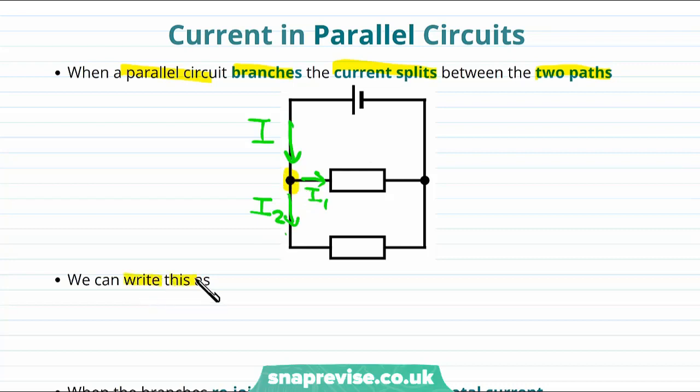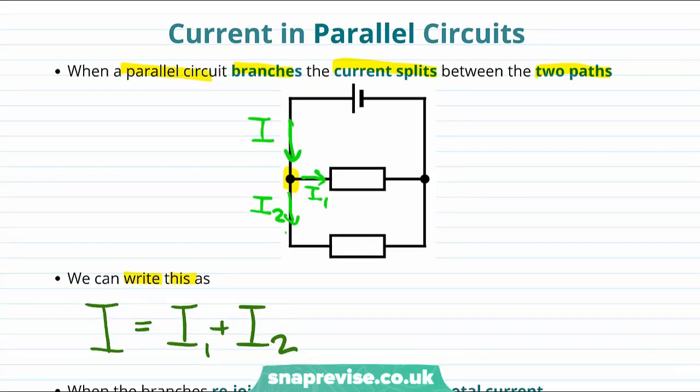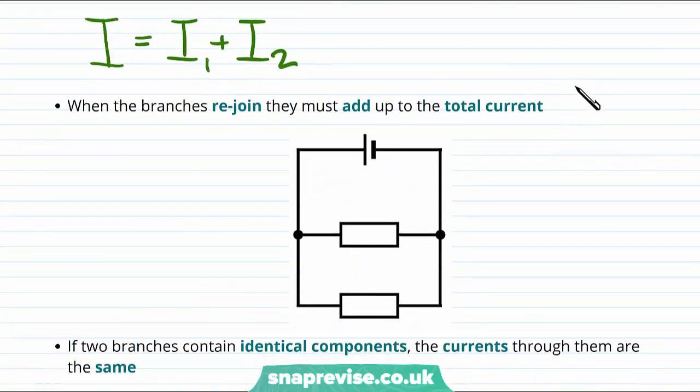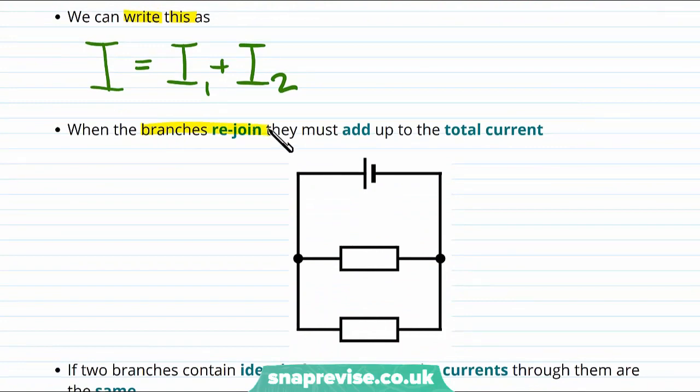and we can write this in the following way. I, for the current going in, is equal to I1 plus I2. We can say something very similar at this point here, where the branches come back together. We say that when the branches rejoin, they must add back up to the total current. So I1 and I2 come back together again to make I.